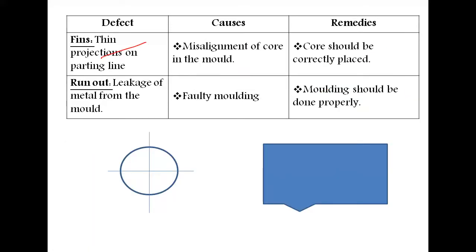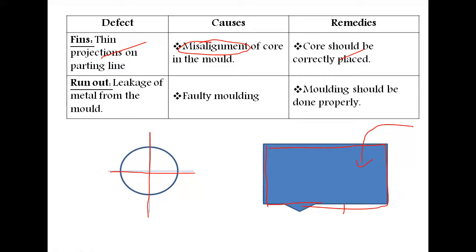Fins are thin projections on the parting line caused by misalignment of the core. The core should be correctly placed to solve this problem. Run out is leakage of metal from the mold — if the mold cavity is not the correct shape and size, molten metal will come out. This happens because ramming is not done properly and the molding sand lacks the correct characteristics. Molding should be done properly using sand with the right properties: cohesiveness, permeability, and green strength.